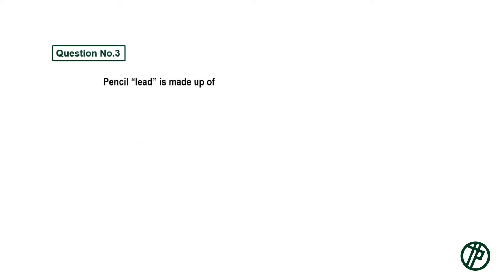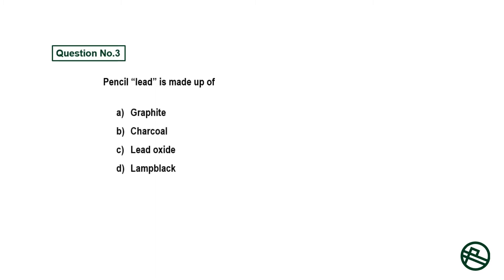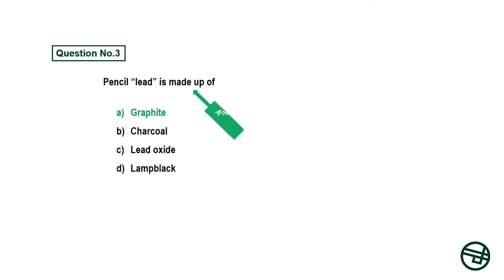Question number three: Pencil lead is made up of — option A: graphite, option B: charcoal, option C: lead oxide, option D: lamp black. Answer is option A: graphite.